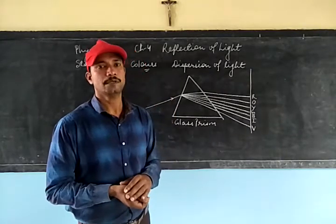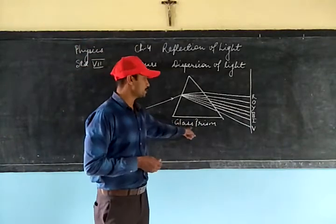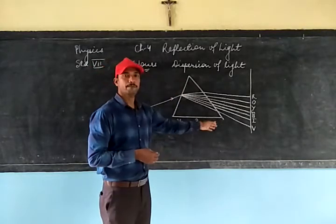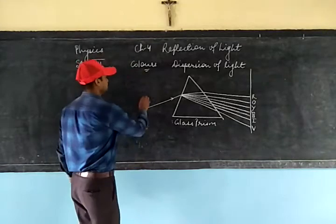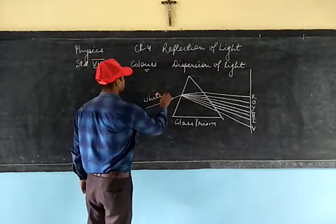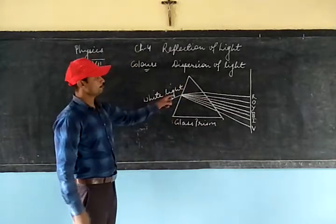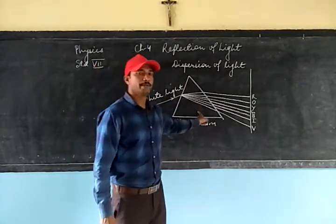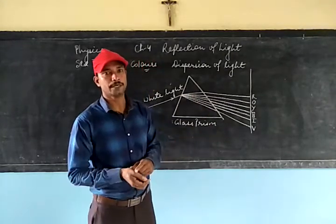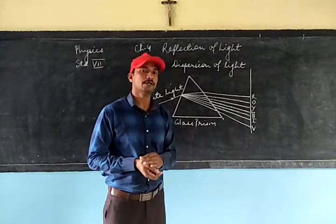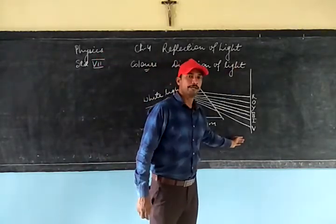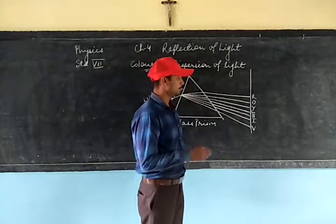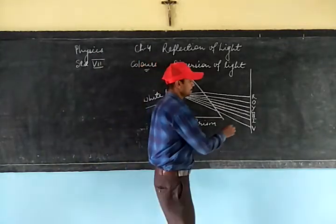When white light is made to fall on a glass prism — you can see I have taken a glass prism, which is an angular shape made of glass — this white light enters the prism and gets split into seven different colors. These seven different colors can be obtained on a screen placed just beyond the prism.